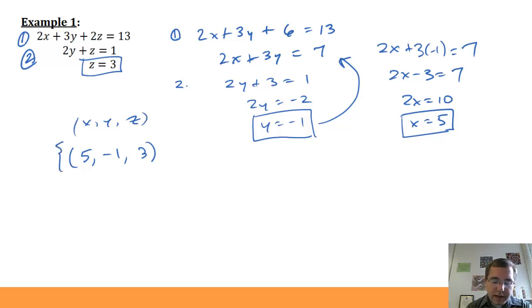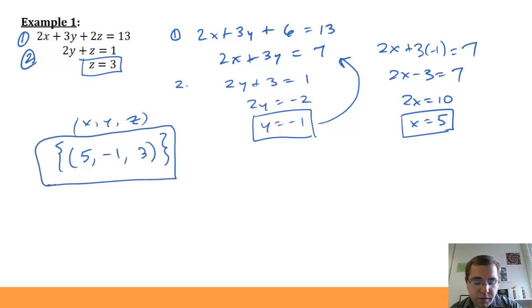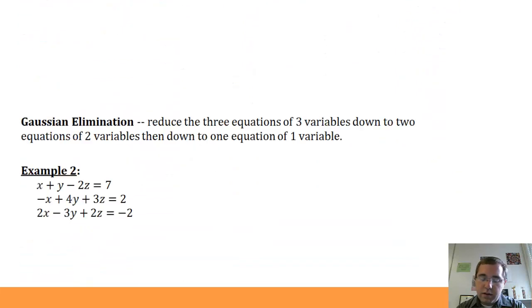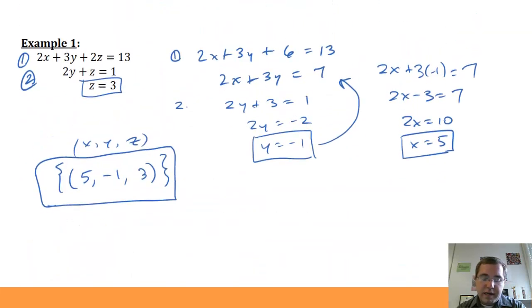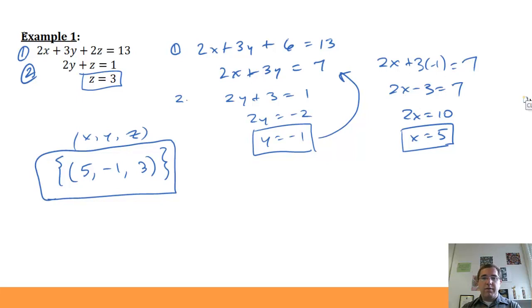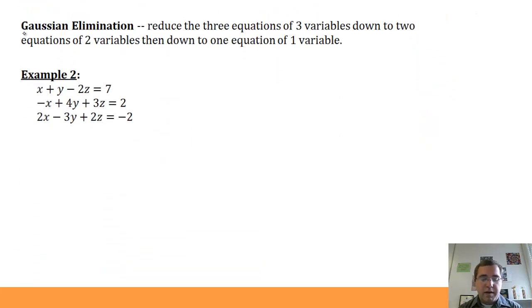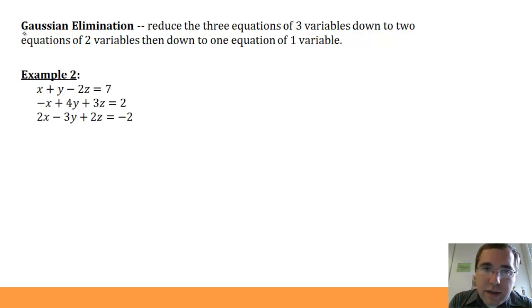We state the answer as an ordered triple: (5, negative 1, 3) — x, y, z. That is the solution set. That was a fairly simple system of three equations with three variables. The process of having one value, plugging it in to find a second, and plugging both in to find the third is essentially the process behind Gaussian elimination.